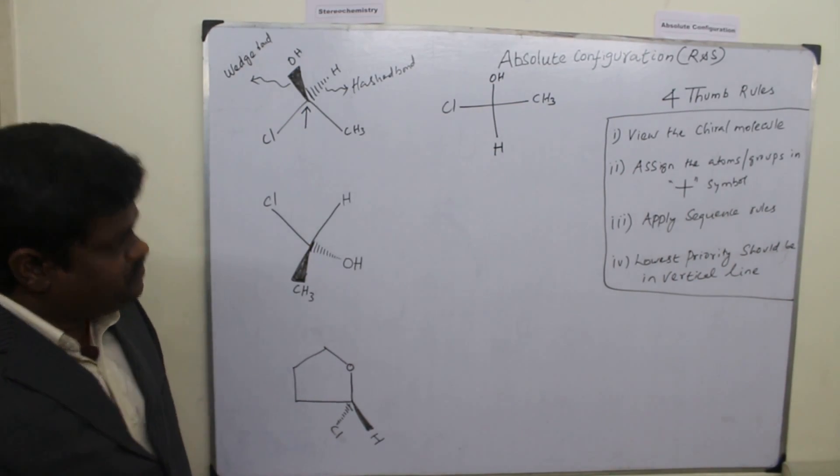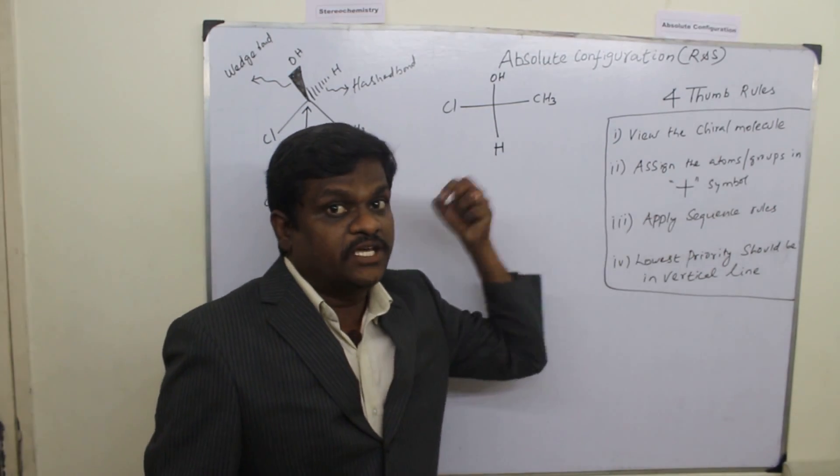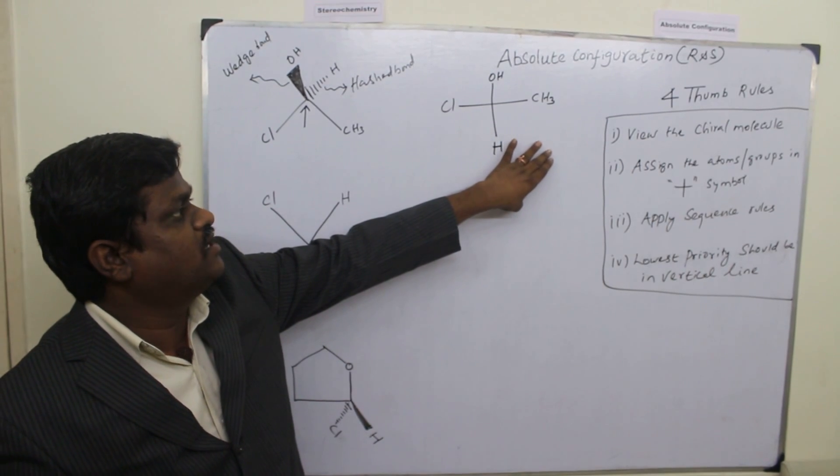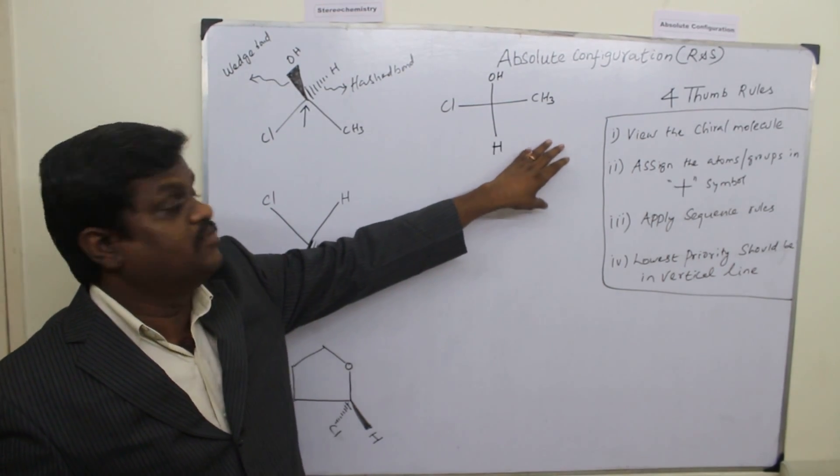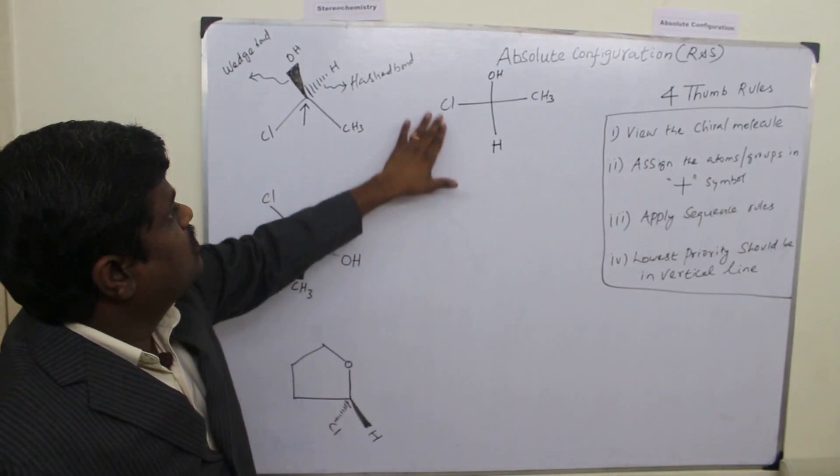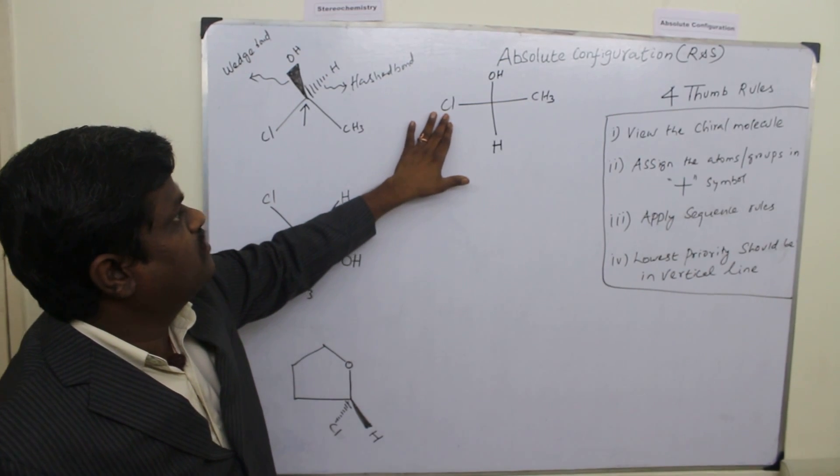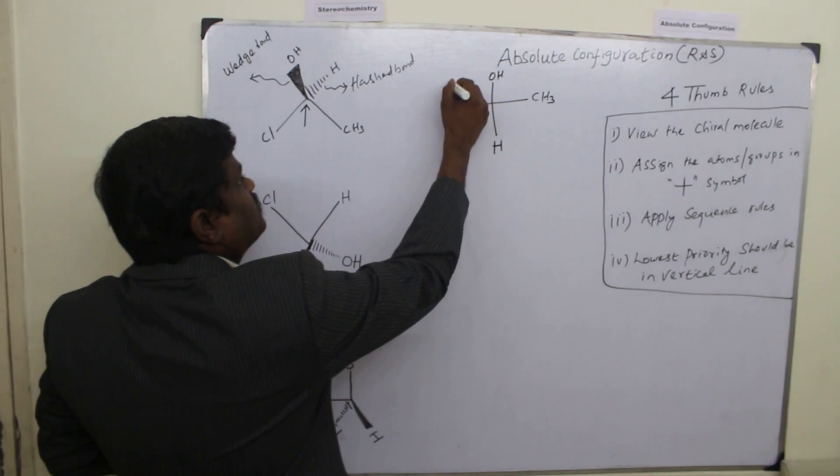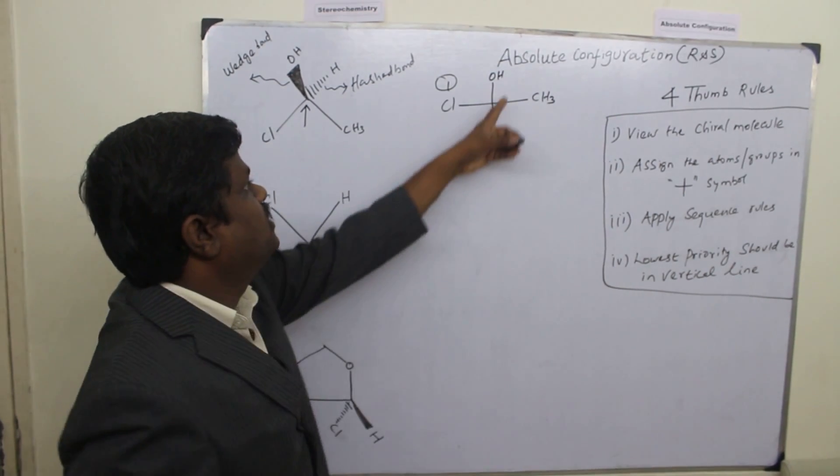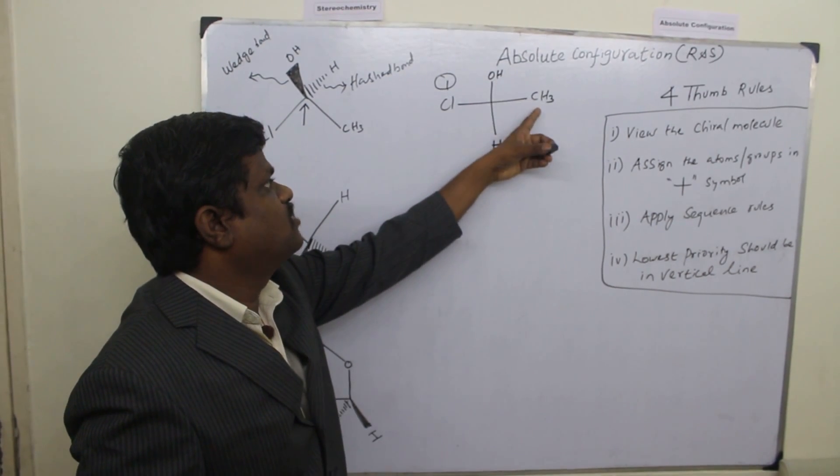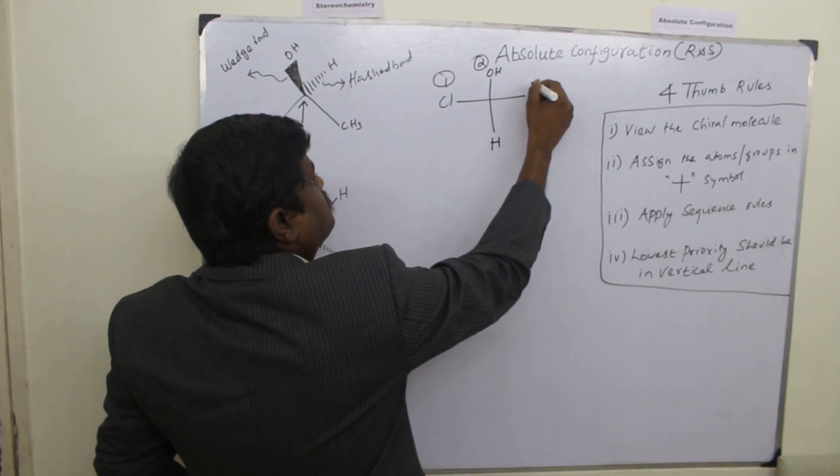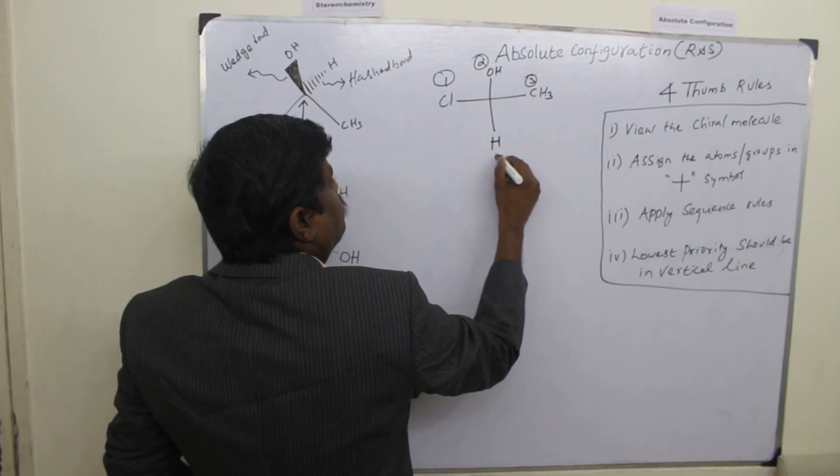Now third rule: Apply the sequence rule. That is to prioritize which atom or group will get the priorities on the basis of the atomic number. So among this, the chlorine will get the maximum priority, the highest priority. So this will get the first one. And this is the oxygen and this is the carbon. Oxygen will get the second priority. And this is the carbon. So this could be the third and this could be the fourth.